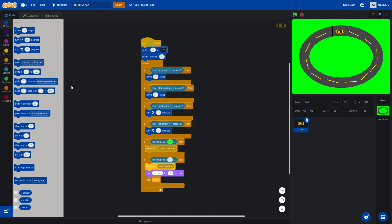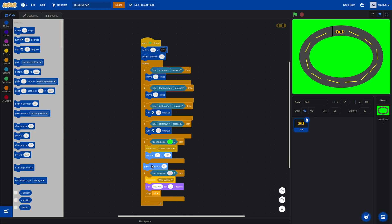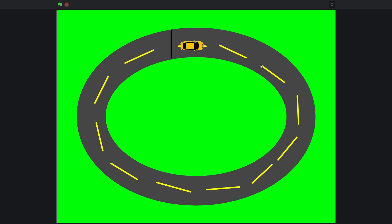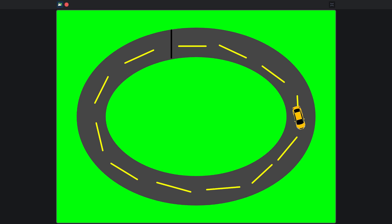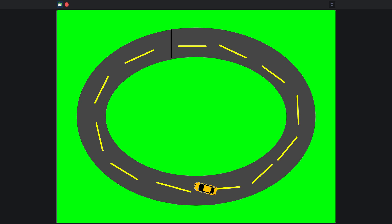Just click on the green flag and get this block again, pointing in towards the correct direction. So if we are starting the game again and we bash into the grass, it will restart the game — that looks fancy. There we go! Now let's try to go slow and steady around the track to try to win the game.